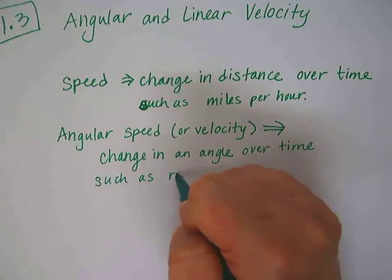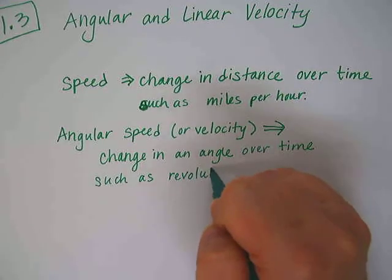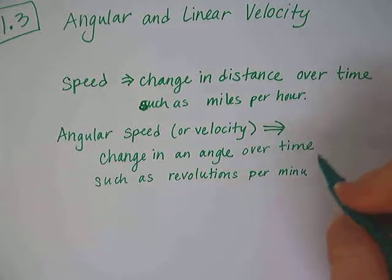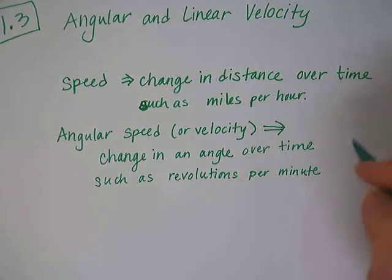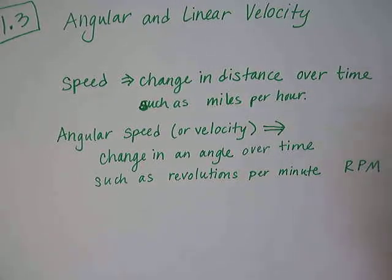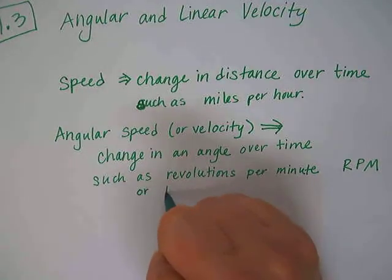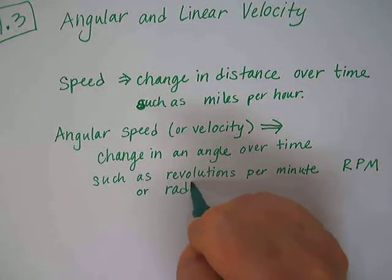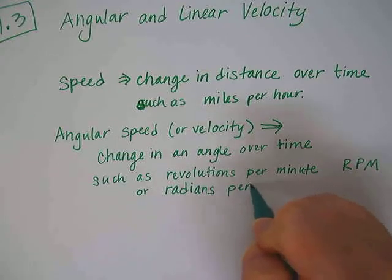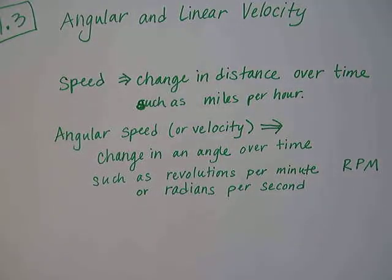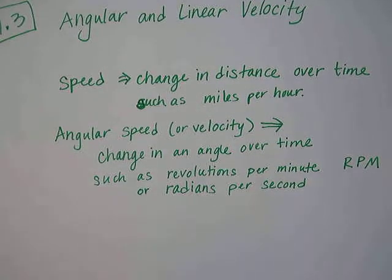Such as revolutions per minute, which is sometimes called RPM. You've probably heard that before, or you might not have, but if you're talking about like a car. Or another way of measuring angular velocity is radians per second, or any other angular type of measurement over any type of time measurement.